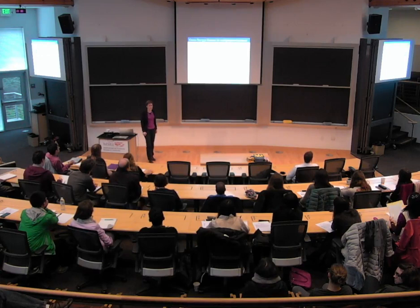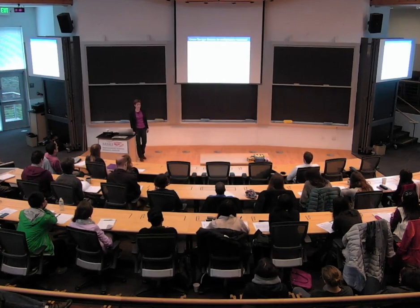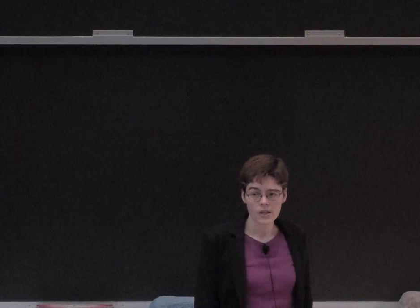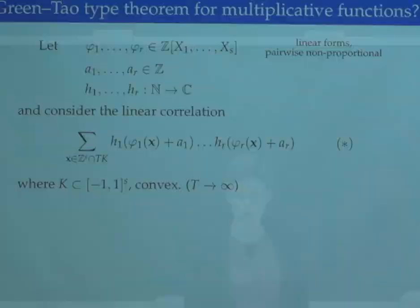More precisely, I want to consider the question of whether there is a Green-Tao type theorem for multiplicative functions. To describe the setup of this question, let's pick a finite number of linear forms phi_1 up to phi_r. These are supposed to be forms in s variables where s is at least 2.